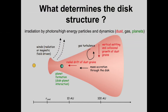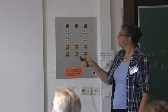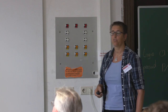Dust grains can radially drift inwards if they are large enough to not be well coupled to the gas flow. They also vertically settle to the midplane, collide with each other, and slowly grow in size. The gas itself, as we think about the star formation process, has mass flowing in from a large molecular cloud, accreting through the disk onto the young forming star — a steady gas flow that is building up the central star.